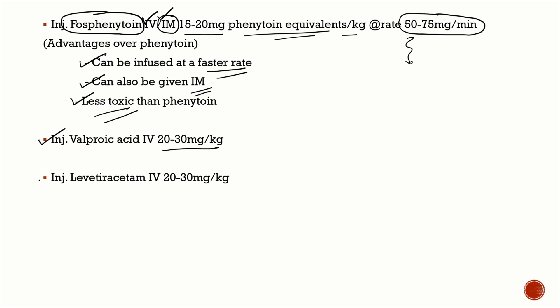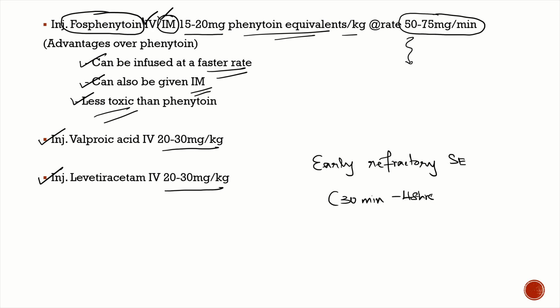Other IV anti-epileptic drugs that can be given include valproic acid at 20 to 30 mg/kg and levetiracetam at 20 to 30 mg/kg. Most cases of status epilepticus will be treated at this point. However, if the patient is still seizing, they are probably in early refractory status epilepticus — when seizures last more than 30 minutes up to 48 hours. This duration is a very important MCQ.